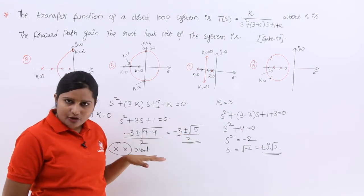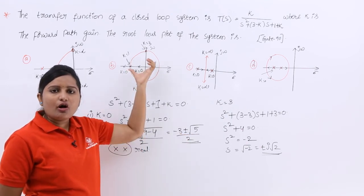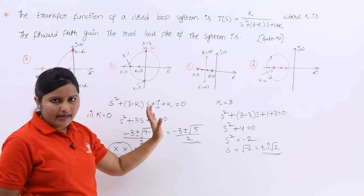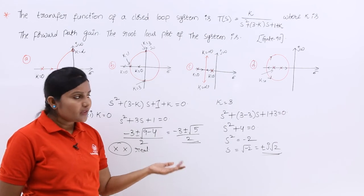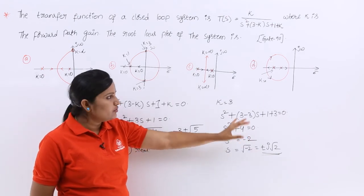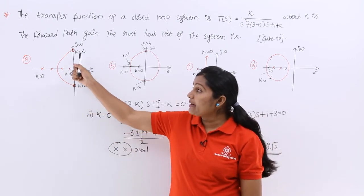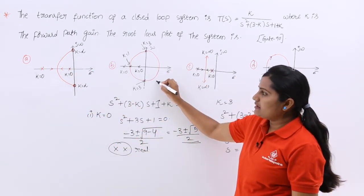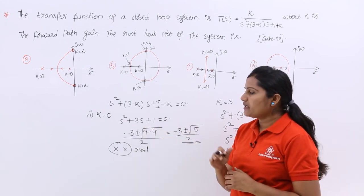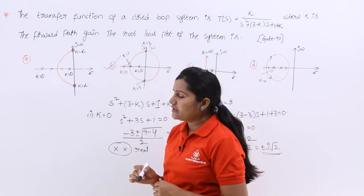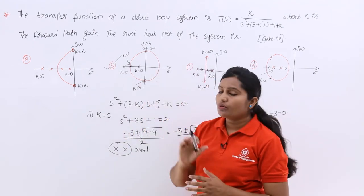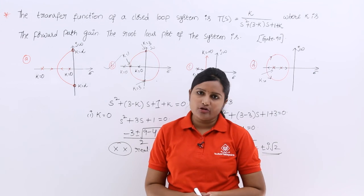By varying K: at K=0 we get two real poles, and at K=3 we get two imaginary poles. This matches option B, which shows real poles at K=0 and imaginary poles at K=3. The other options either show imaginary zeros (not poles) on the imaginary axis or don't match. By the inspection method, option B is the correct answer.